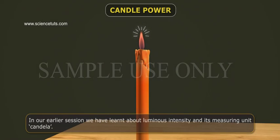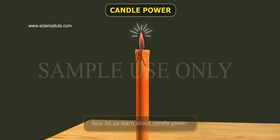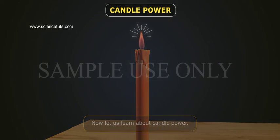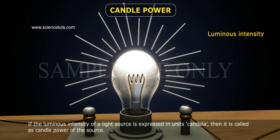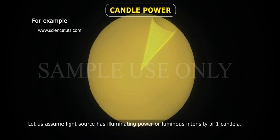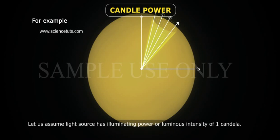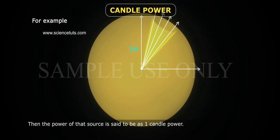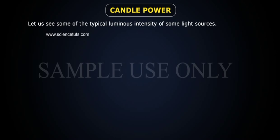In our earlier session we learned about luminous intensity and its measuring unit candela. Now let's learn about candle power. If the luminous intensity of a light source is expressed in units of candela, then it is called the candle power of the source. For example, if a light source has a luminous intensity of one candela, then the power of that source is said to be one candle power.